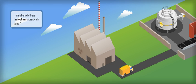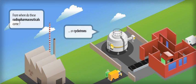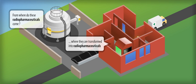The radiopharmaceuticals' journey. From where do these radiopharmaceuticals come? Radioactive products are originated either from reactors or cyclotrons. These products are then processed in radiopharmacies, where they are transformed into radiopharmaceuticals.